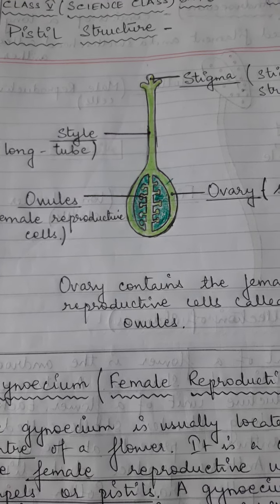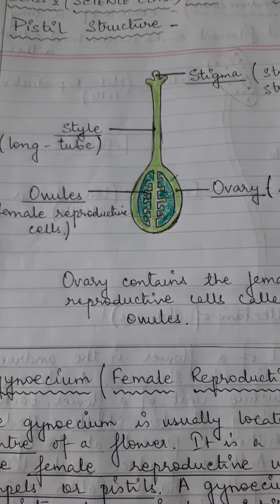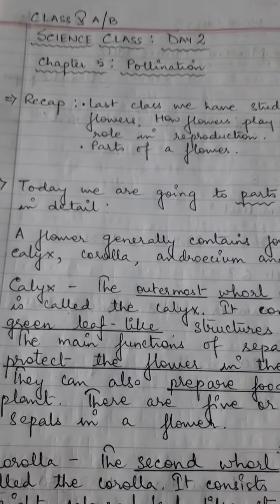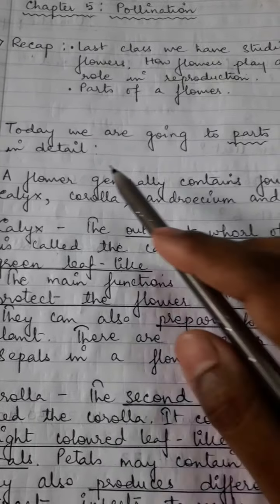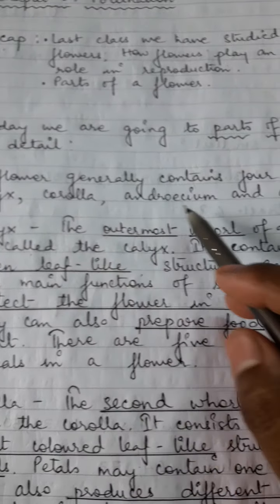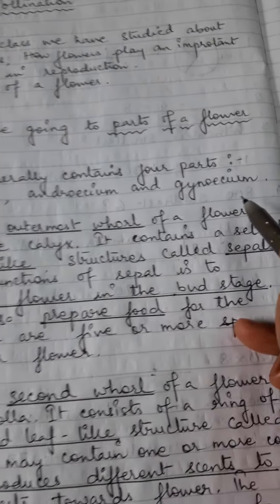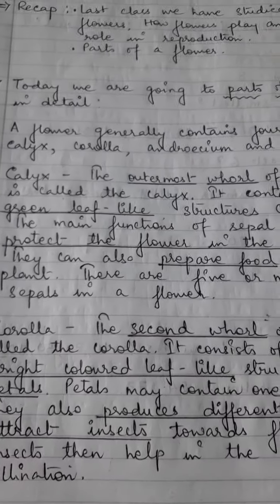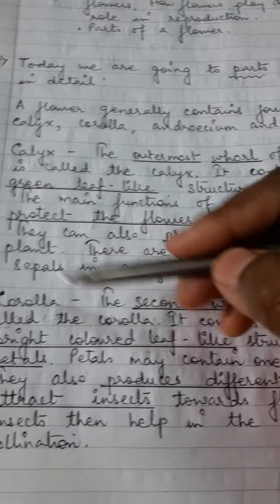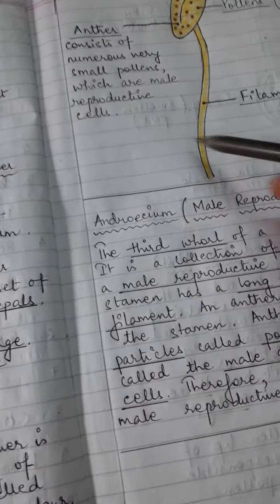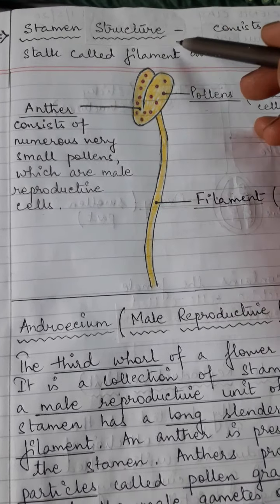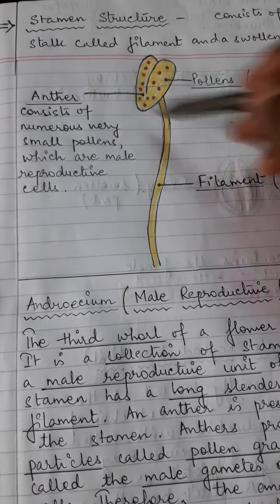I would like to have a quick recap of what we have studied in our last class. In our last class we studied about the four parts of a flower: Calyx, Corolla, Androecium, and Gynoecium. We also studied about the function of Calyx, Corolla, and Androecium, and the structure of stamen and its parts.